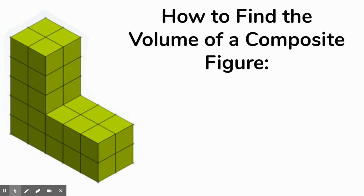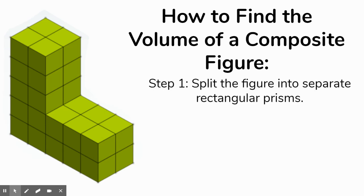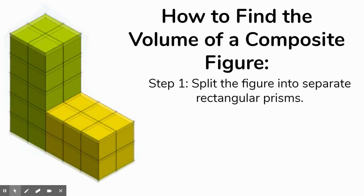Now that we've gone over what a composite figure is, it's time to figure out how to find the volume of a composite figure. The first step is that we're going to have to split the figure into separate rectangular prisms. If you look at this example right here, here's one possible way I could split it into two prisms. I could split it like that, so I have a much taller green prism and then a shorter yellow prism.